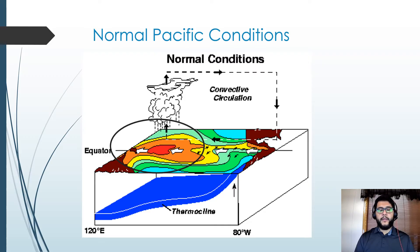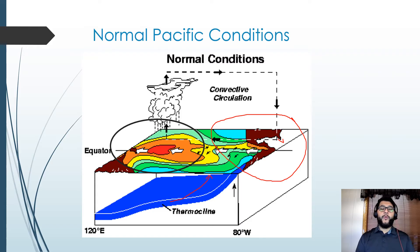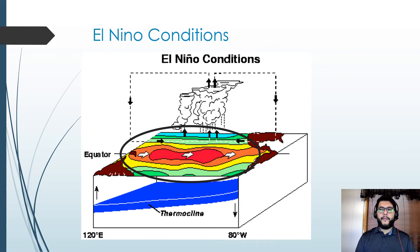On the left is Australia, and on the right is North America and South America. Normally, the western portion of the Pacific is very warm and the eastern portion is cooler, which allows for upwelling — water rushes up toward that portion. That leads to cooler, oxygen-rich water, great fishing, and more rain and storms toward the western Pacific.